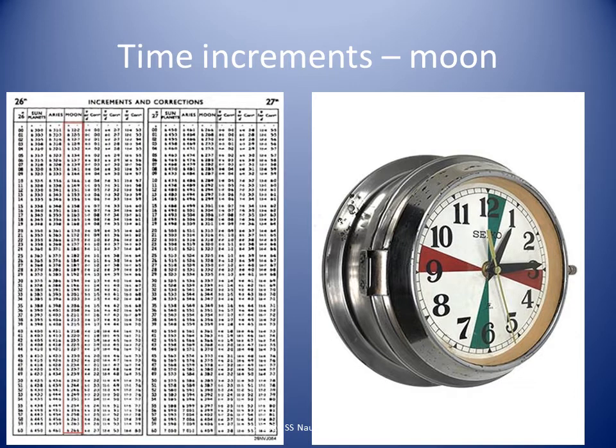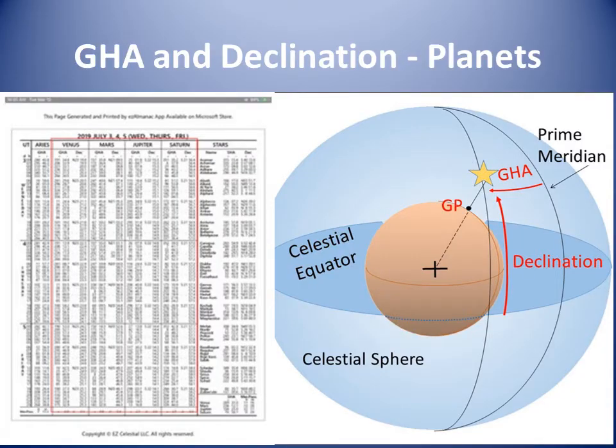The navigational planets are occasionally available and useful for observing bearings and calculating azimuths for comparison. To calculate azimuth, we need the geographical position of the body — the GHA and the declination. The GHA and declination of the planets are highlighted in red in the center of the Stars and Planets page of the Almanac.